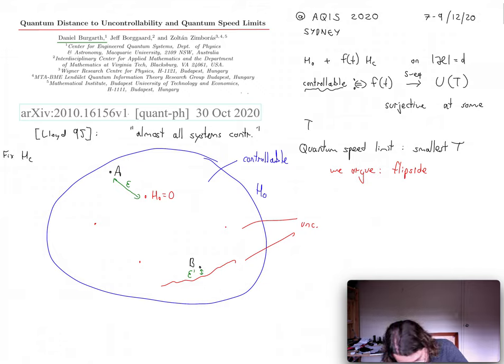So more precisely, we look at the smallest perturbation, which makes the modified system, the perturbed system, uncontrollable. This is how we define the distance to uncontrollability.